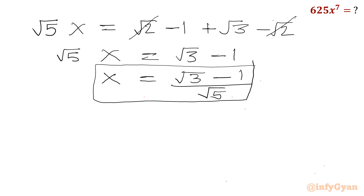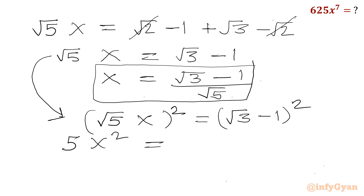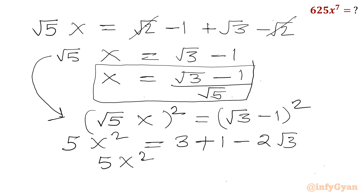Now I will consider squaring both sides of root 5·x = root 3 minus 1. So (root 5·x)² equals (root 3 minus 1)², giving 5x² equal to (root 3)² minus 2·root 3 plus 1², which is 3 minus 2·root 3 plus 1. So I can write 5x² equals 4 minus 2·root 3.